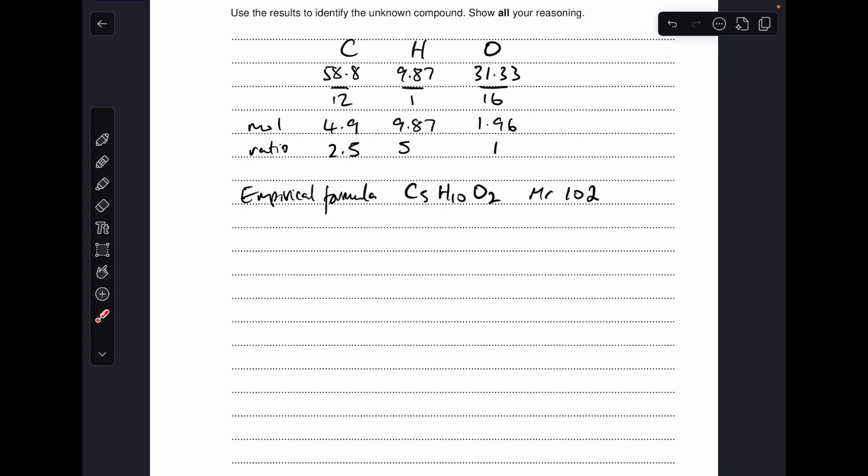That means the empirical formula for this compound is C5H10O2. Then straight away you need to be working out the MR of the empirical formula and then we bring in that information from the mass spectrum, the molecular ion peak at M over Z 102. That means the MR of the molecule is 102 and so the molecular formula is the same as the empirical formula.